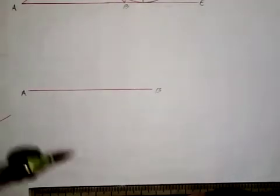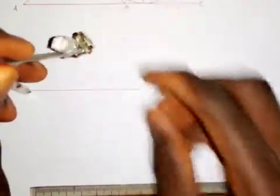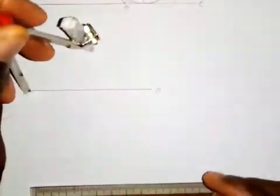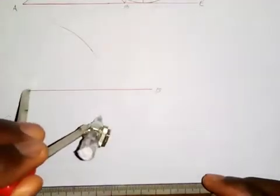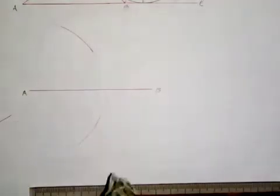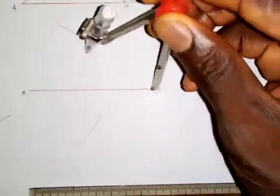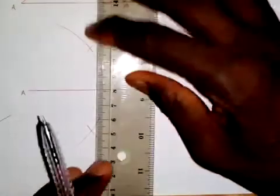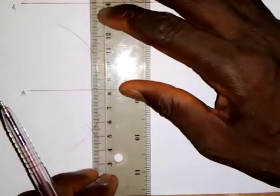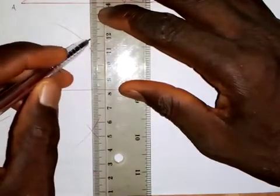I put the pin point on my compass and draw an arc above and below. Then I put the same radius at B and draw arcs above and below. Next, I join the points of intersection of the arcs together.